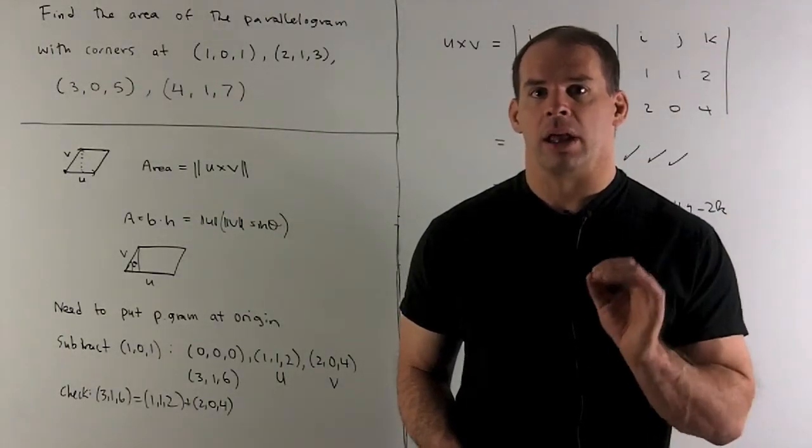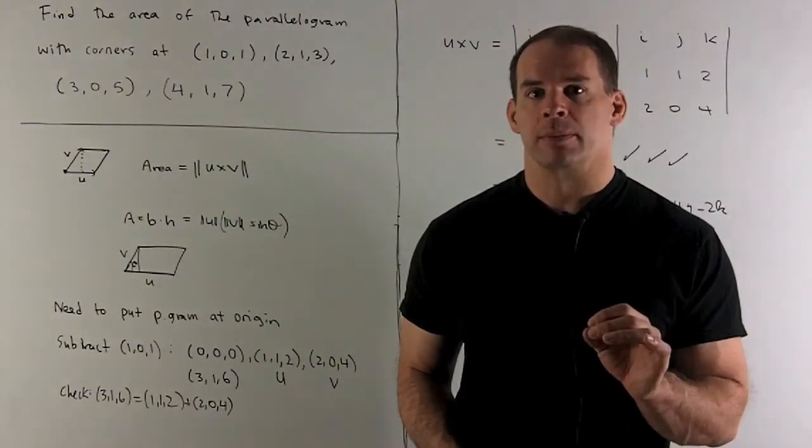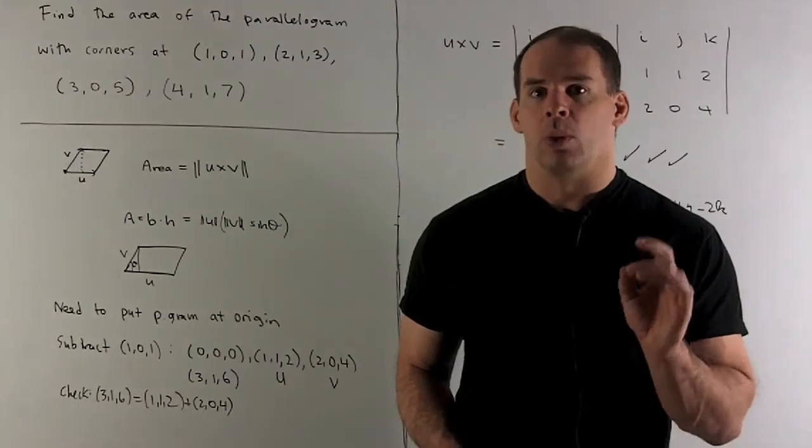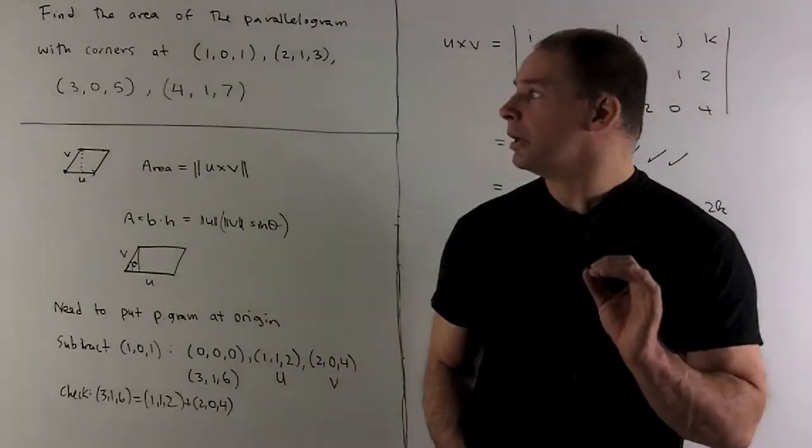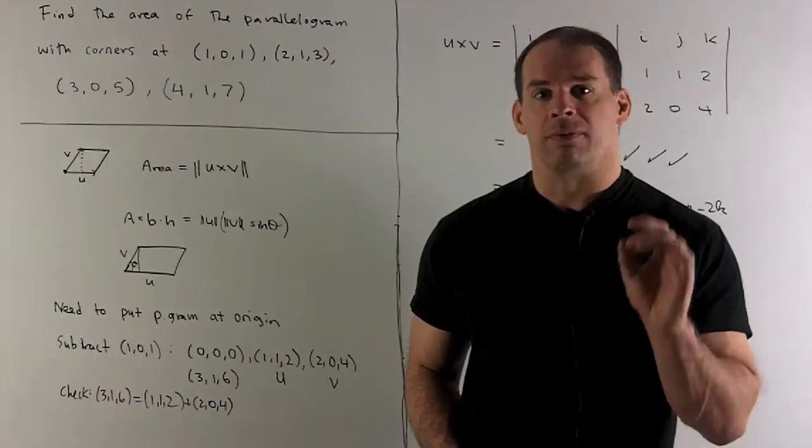Find the area of the parallelogram in three space, with corners at 101, 213, 305, and 417.